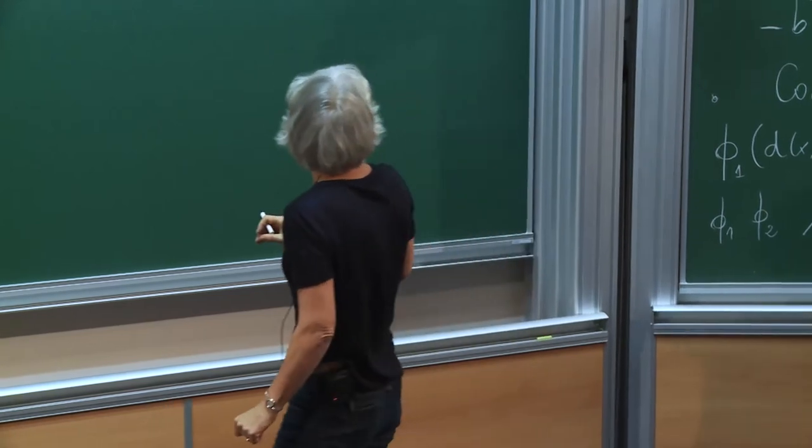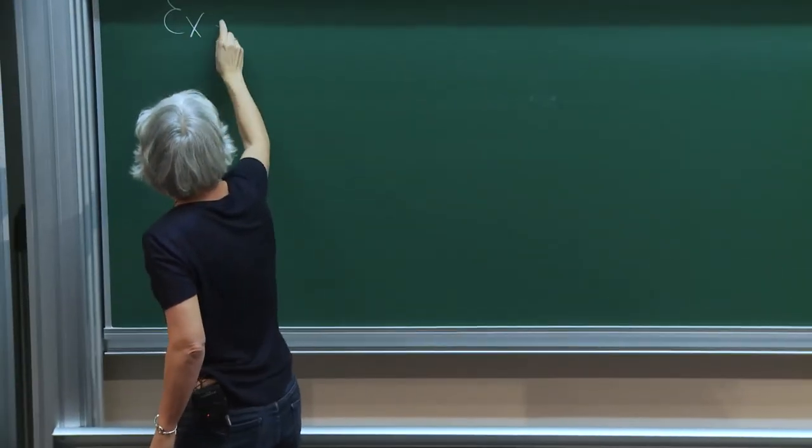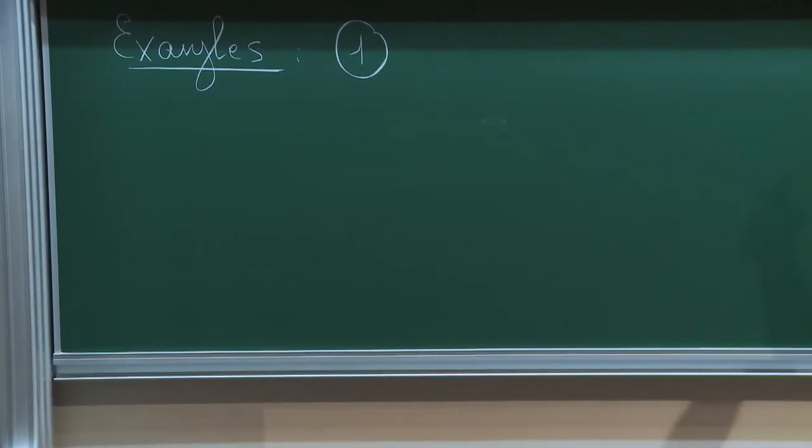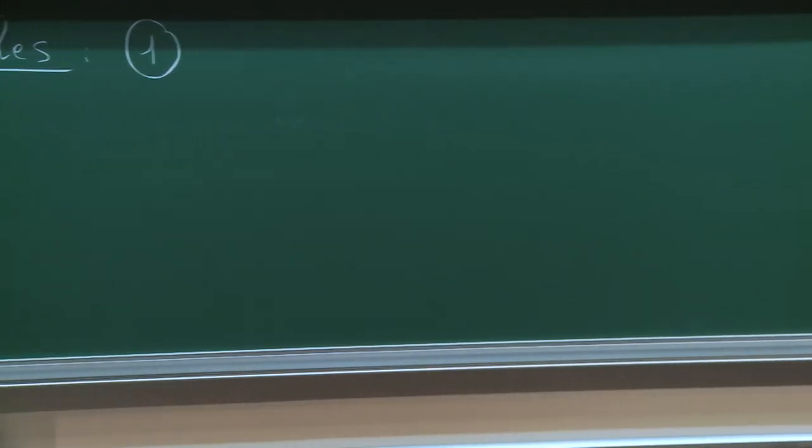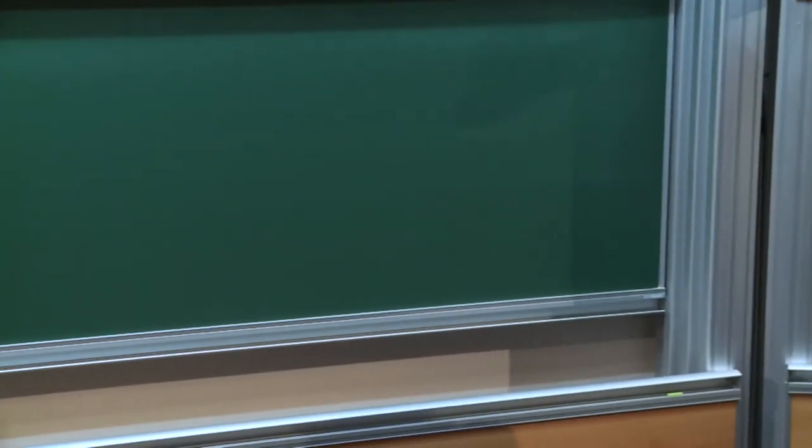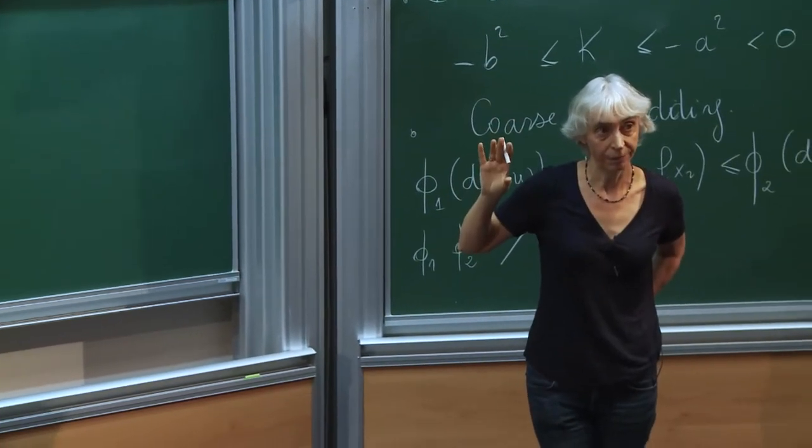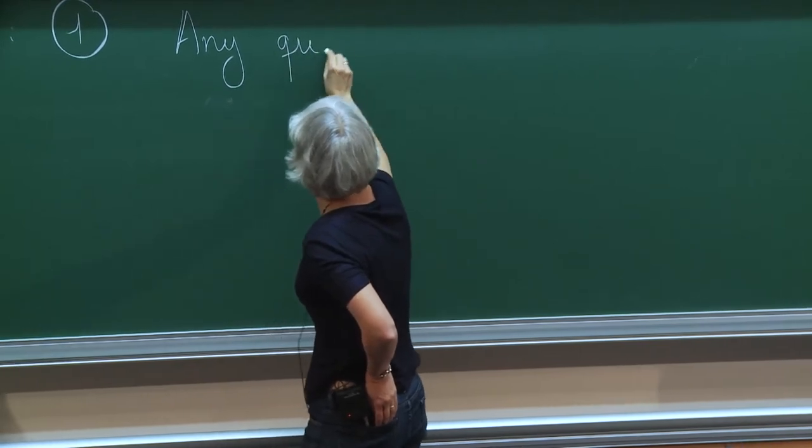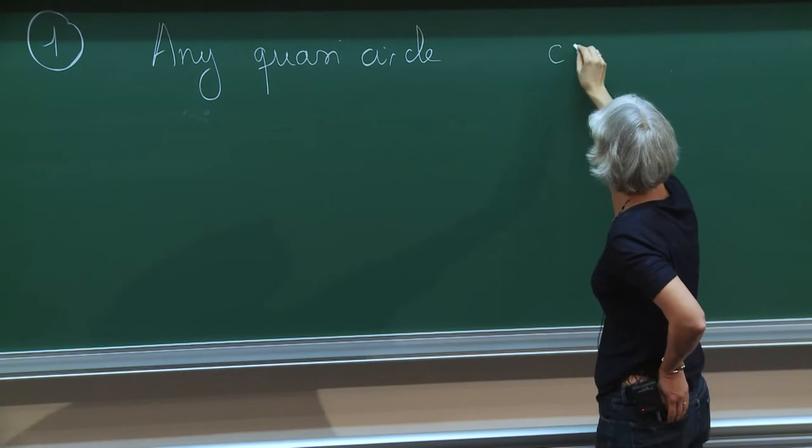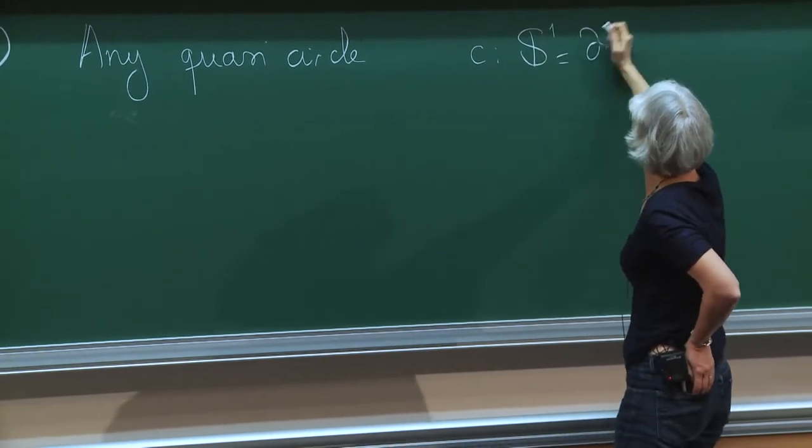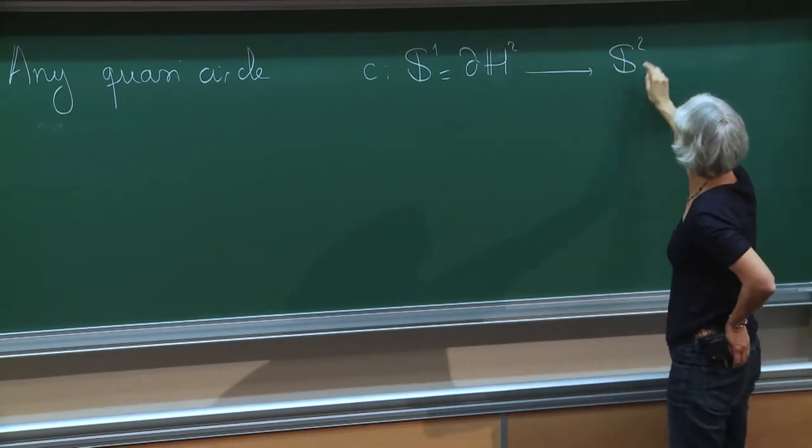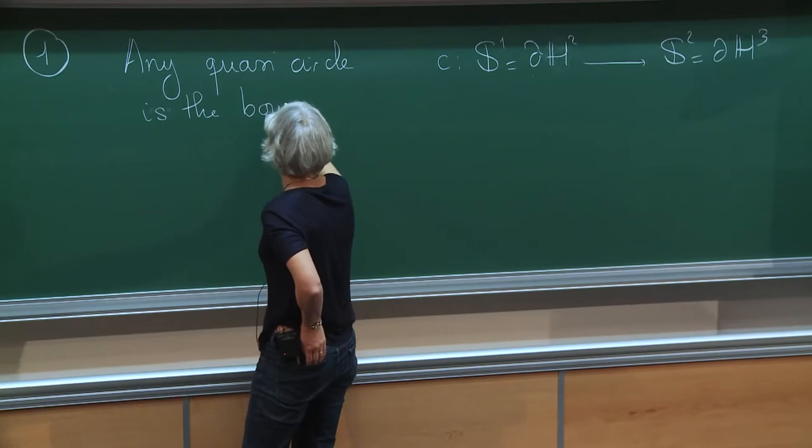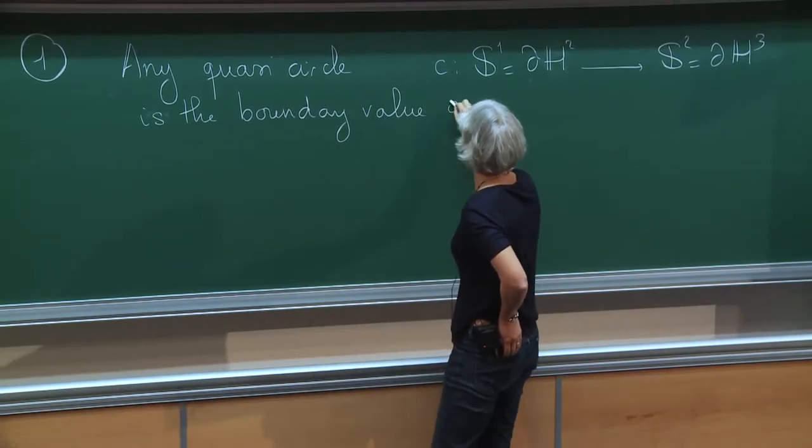I would like to give examples and applications of our result. So first of all, I insist on the fact that in our result we do not assume the source and the target manifold to be the same and we do not even require them to have the same dimension. So for example, an instance of our result gives the following: a quasi-circle is the boundary value of a unique harmonic map.